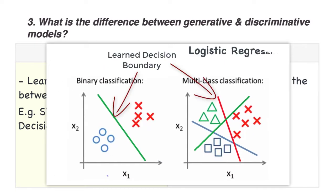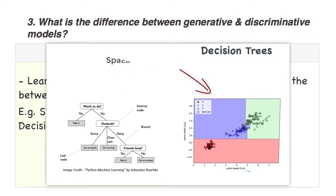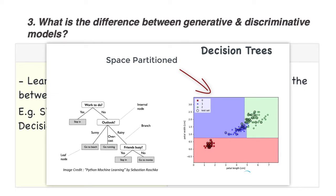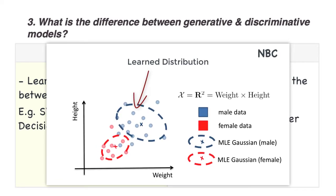Logistic regression is also discriminative, as we learn a linear decision boundary. Decision trees are also discriminative, as each of the non-leaf nodes will partition space, creating boundaries. Naive Bayes' classifiers are generative, as they learn the distributions of the classes themselves.